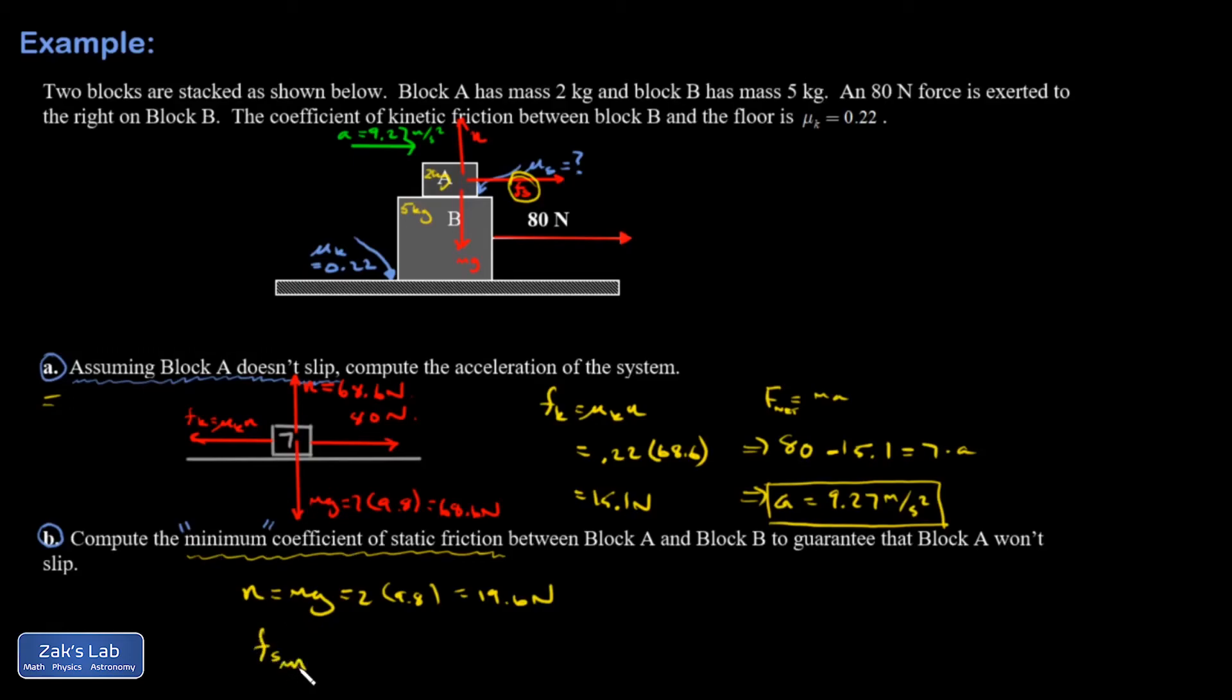So Fs max. Okay, and I have the normal force and I'm trying to find the static friction coefficient so something that's missing here is that static friction force. I've got to figure it out and that will come from Newton's second law analysis on this 2 kilogram block. The only force on it pointing to the right is Fs. The mass is 2 kilograms. The acceleration is 9.27 meters per second squared calculated in part A. And so I've figured out how big the friction force has to be. 18.54 newtons.